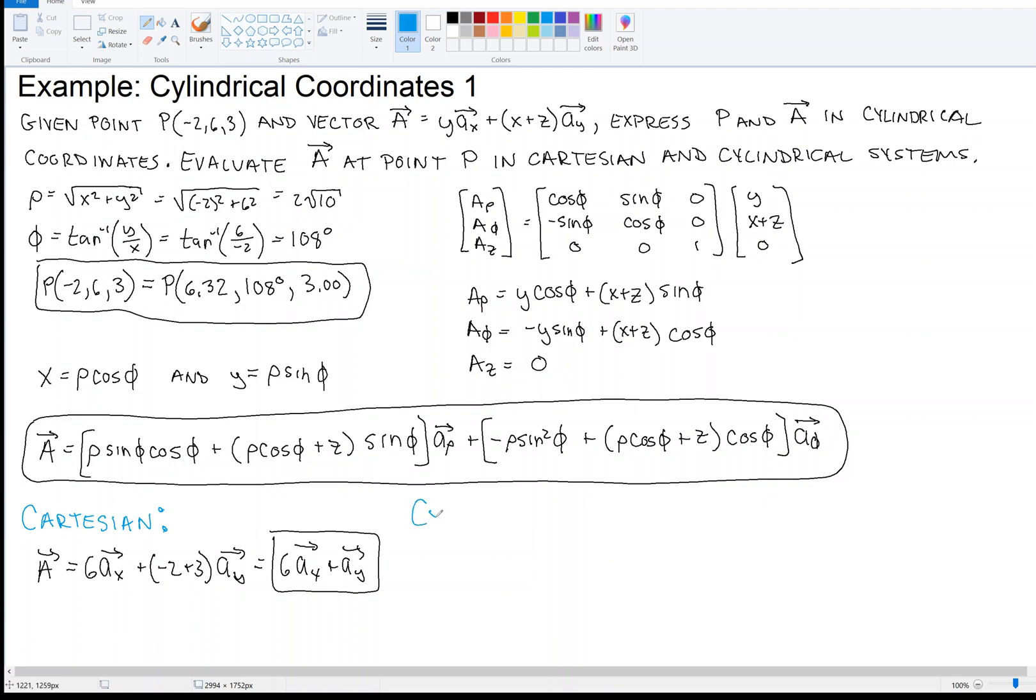Now, let's do it in cylindrical. What we need to do is evaluate this thing in the box. So we have ρ, and we know what ρ is. ρ is 2√10. And we know what φ is. φ is 108°, but 108 degrees was rounded to three significant digits. We're going to try to keep this exact. So we need the sine of φ, the cosine of φ, and we know what z is. z is 3.